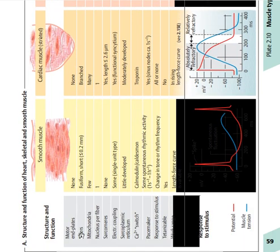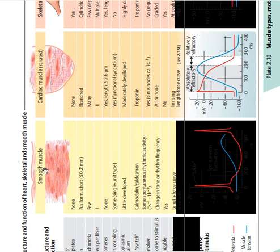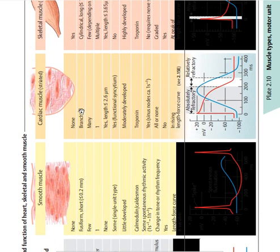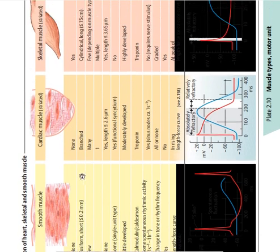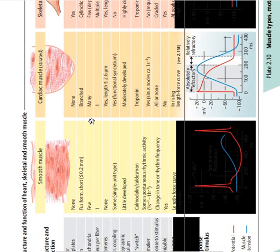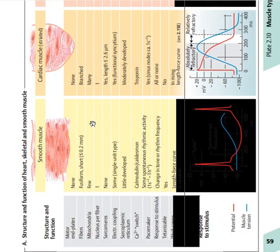The second difference is fibers. The fibers for smooth muscles are fusiform and short. The fibers for cardiac muscles are branched, and the fibers for skeletal muscles are cylindrical and long — that is 15 centimeters. While that of smooth muscle is 0.2 millimeters. You can actually see a branch or a field of skeletal muscles.